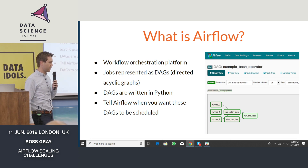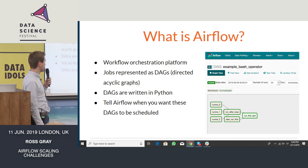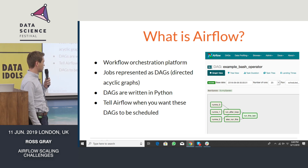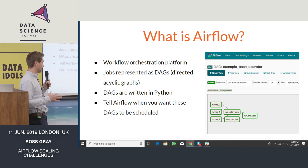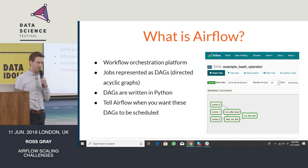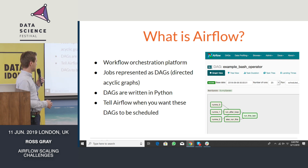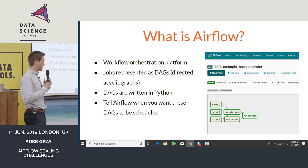Just to explain very briefly what Airflow is: Airflow is a workflow orchestration platform. What this means is you can define a bunch of jobs that you want to run, and each of these jobs is composed of various tasks. You define your dependencies between these tasks, and they're represented as a DAG — this stands for Directed Acyclic Graph — which sounds fancy but it's quite a straightforward concept, and you can see an example of one there on the slide.